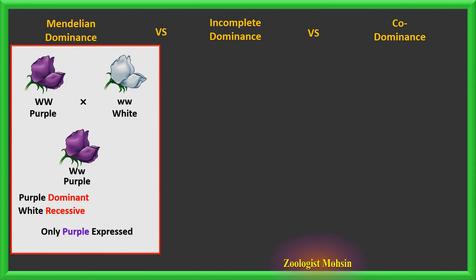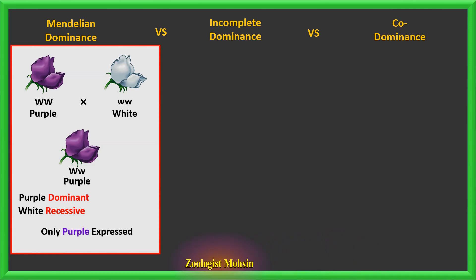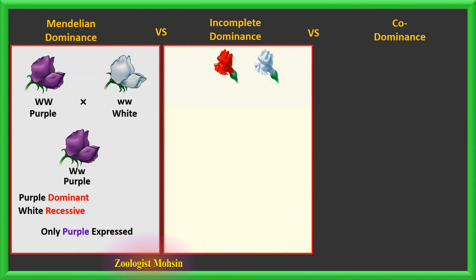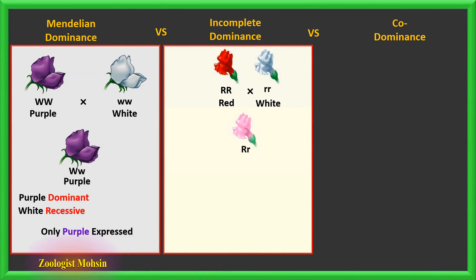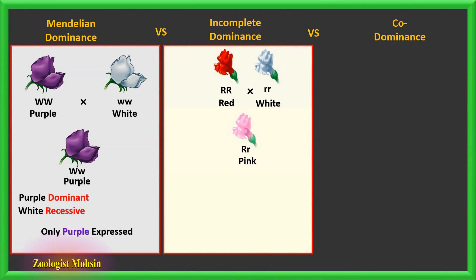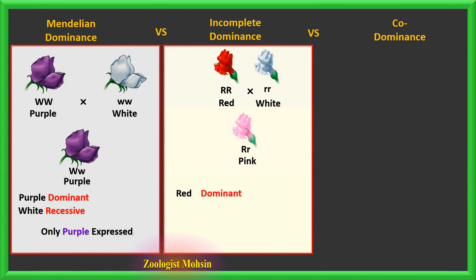Non-Mendelian examples include incomplete dominance, co-dominance, polygenic traits, and epistasis. If a red-flowered snapdragon plant is crossed with a white-flowered snapdragon, the F1 is surprising — instead of red or white flowers, we observe pink ones, which is a mix of red and white. This shows that both red and white are expressed in F1, but at half percentage each.